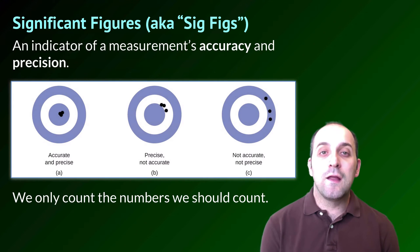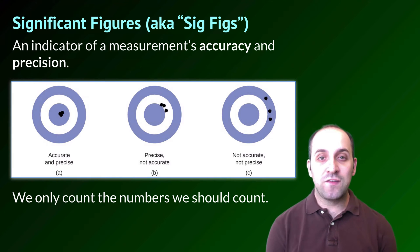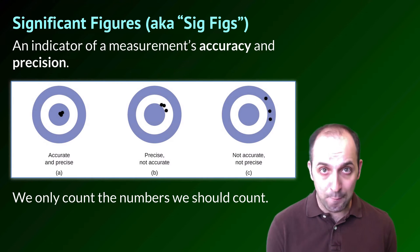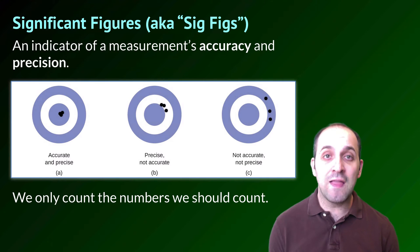Before we get into it, let's get a handle on these notions of accuracy and precision. Precision is pretty simple. Precision is just the level of detail with which you can make a particular measurement.